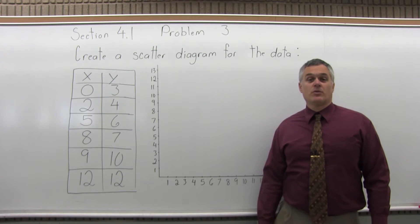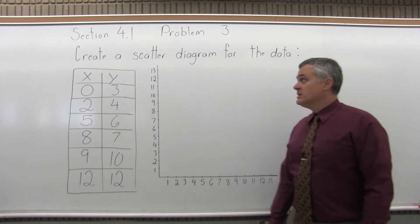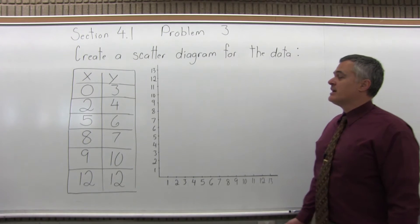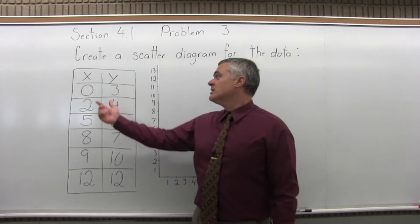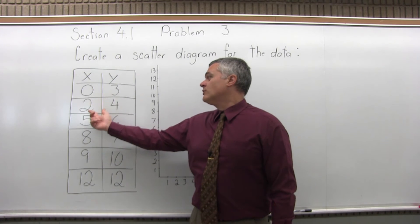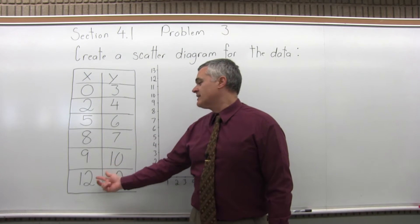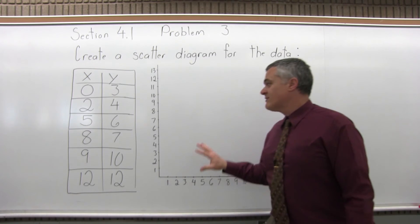This is Section 4.1, Problem 3. So let's create a scatter diagram for the data, and we have six data points. We have 0, 3, 2, 4, 5, 6, 8, 7, 9, 10, and 12, 12. So I have a graph that I started.